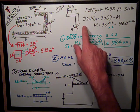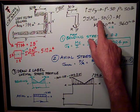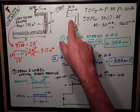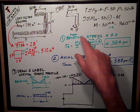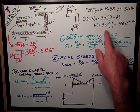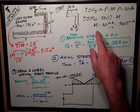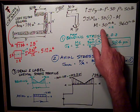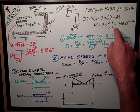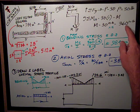Sum of moments at that section, I get my 30 pounds times the one foot moment arm minus the reaction M, so M is equal to 30 foot pounds. I multiply it by 12 to get it into inches, 360 inch-pounds.